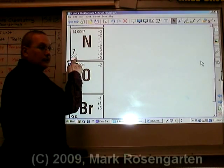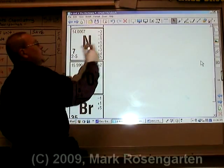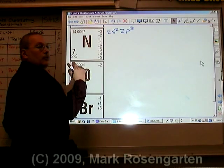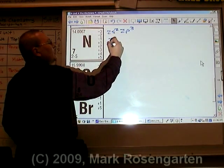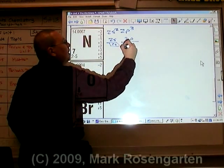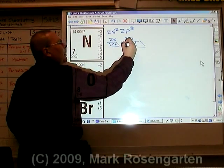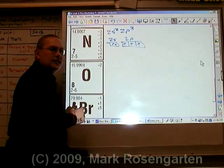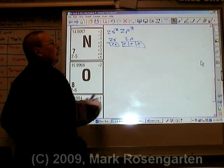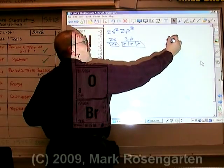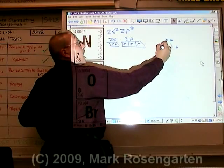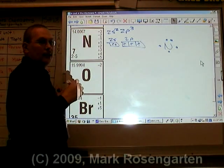Nitrogen has five valence electrons: 2s2, 2p3 adds up to five. The 2s electrons are up, down; the 2p: up, up, up — remember, the ups go in before anything else does, so we have three unpaired electrons. When we draw the dot diagram, we have the S electrons that are paired, and then three unpaired valence electrons.